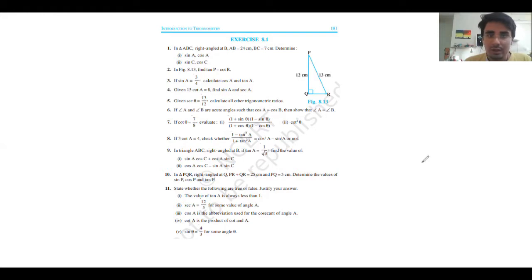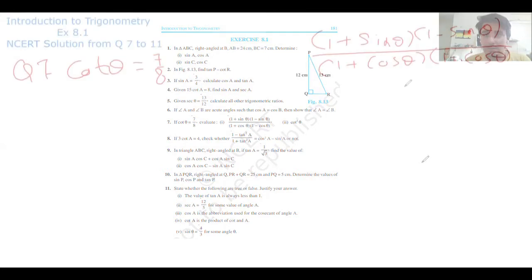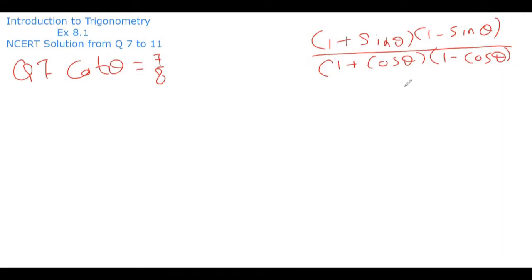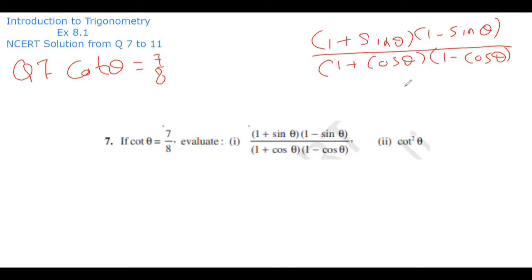Without wasting any time, let's start today's class. Our first question is: cot θ = 7/8, and we need to find the value of (1 + sin θ)(1 − sin θ) upon (1 + cos θ)(1 − sin θ).